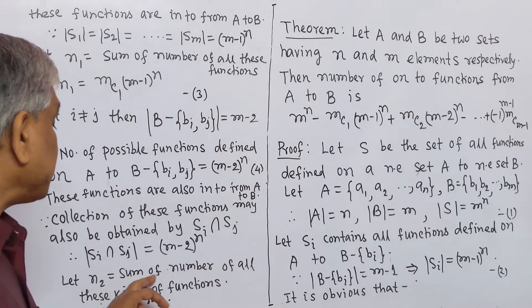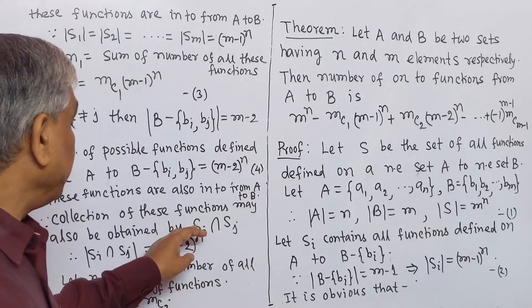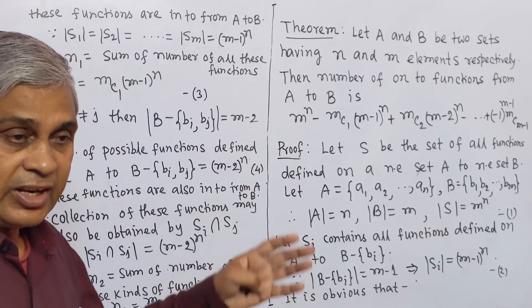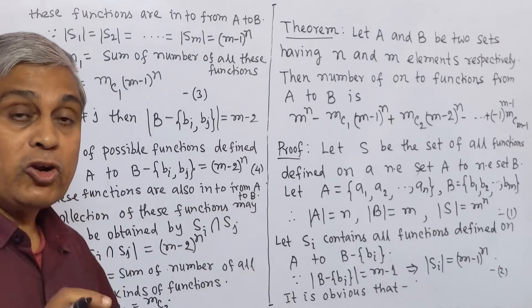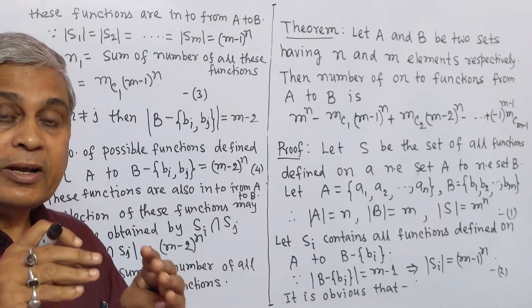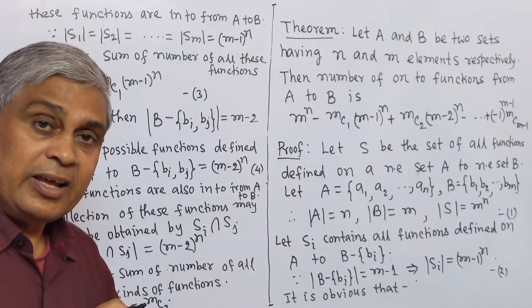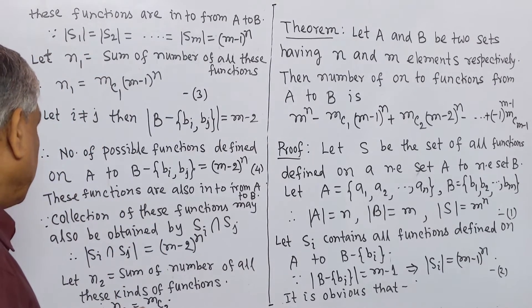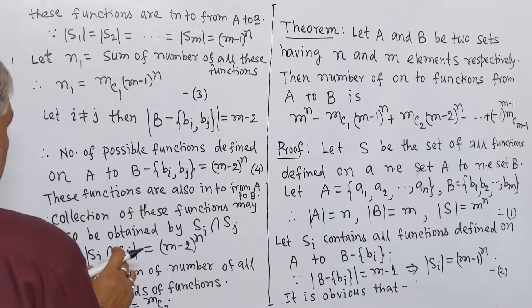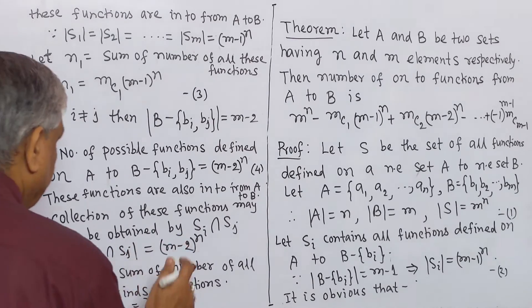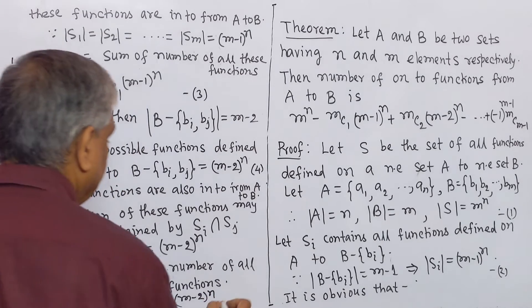Let N2 be the sum of all these kinds of functions. Here, we have taken two sets Si and Sj. The number of pairs when i not equal to j — since the total number of Si sets is m, if we take two members among m members, that will be mC2. So, N2 equals mC2 multiplied by (m-2) to the power n.